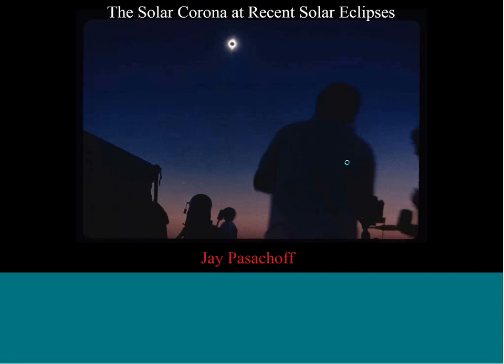Now the moon has blocked sunlight from hitting the Earth's atmosphere, so the sky is not blue — we're in the shadow. You see my silhouette at the right, and toward the left, one of my students operating a telescope. You can see Jupiter as a point right over that telescope. Looking near the horizon all the way around 360 degrees, we're looking out of the shadow of the moon, and for the same reason that a sunset is reddish, we see reddish on the horizon.